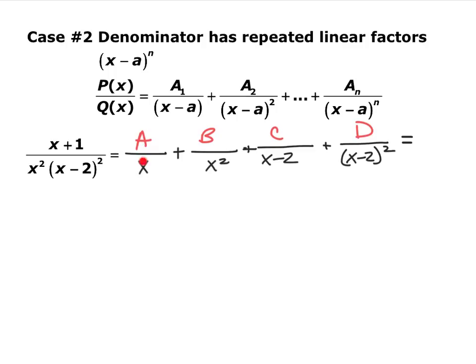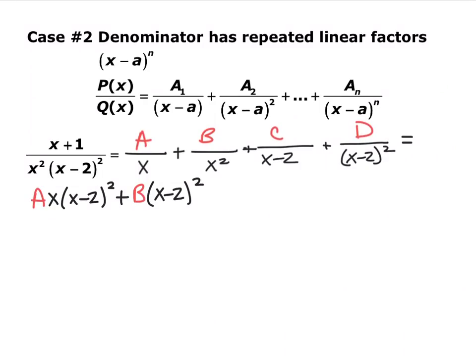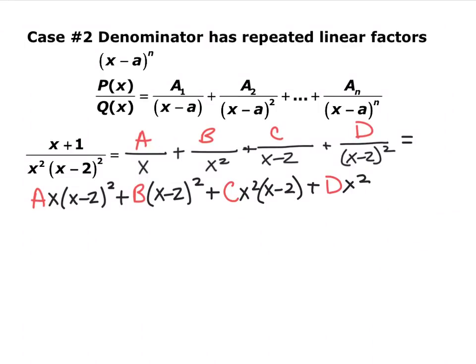For the first fraction with denominator x, multiply by x to get x squared, and by x minus 2 quantity squared. For b, which has x squared, it just needs x minus 2 quantity squared. For c, which has one x minus 2, it needs x squared and one more x minus 2. For d, which has x minus 2 squared, it just needs x squared. Go ahead and pause the video and FOIL all of this out.